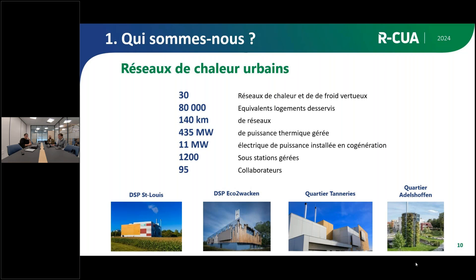Nous travaillons en multi-technologie et multi-types d'énergie : pompe à chaleur, centrale biomasse, co-génération biomasse, récupération de chaleur fatale auprès d'industriels. Notre focus, c'est notamment de travailler essentiellement sur l'innovation. On a créé des filières très locales d'approvisionnement en rafle de maïs pour nos différentes centrales de combustion — de la rafle récoltée par les agriculteurs du 67 et du 68.